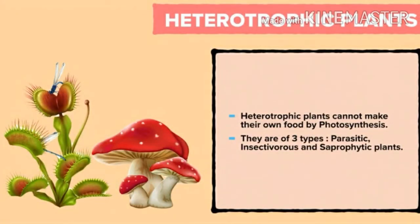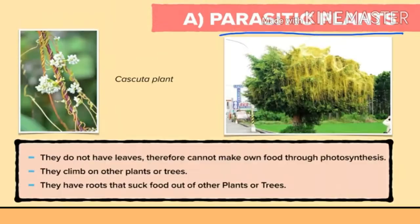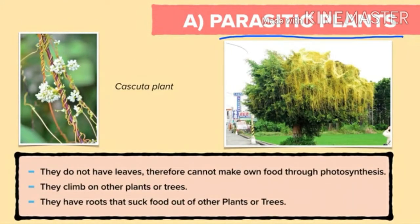Heterotrophic plants cannot make their own food by photosynthesis as these plants do not contain chlorophyll pigment. Therefore, they are unable to perform photosynthesis. Heterotrophic plants are of three types: parasitic, insectivorous, and saprophytic plants. Parasitic plants do not have leaves, therefore cannot make their own food through photosynthesis. They climb on other plants or trees and have roots that suck food out of them. In the picture, you can see the cuscuta plant — in Hindi it is called amarval. It grows with the help of other plants and gets its nutrition from them.